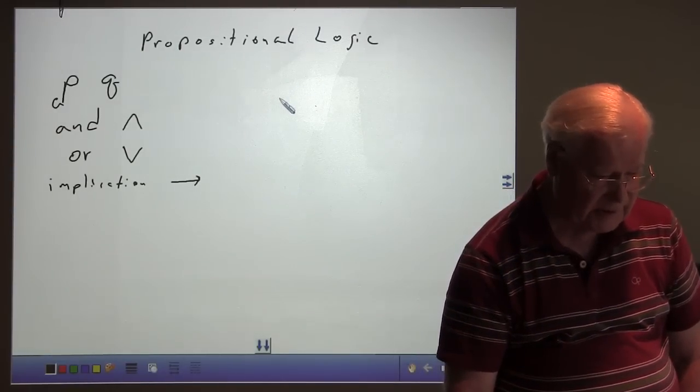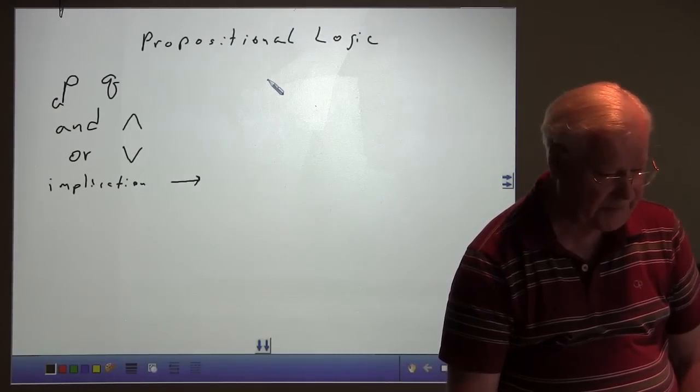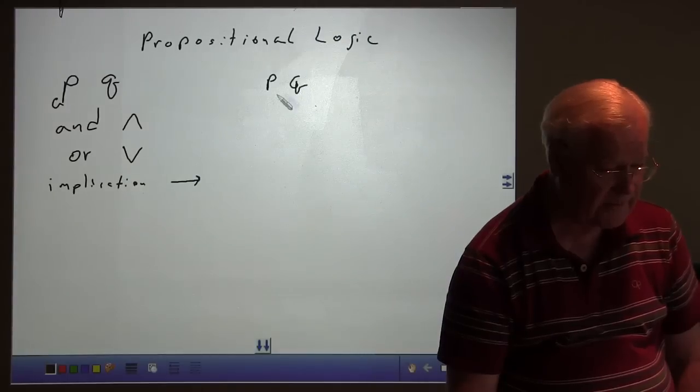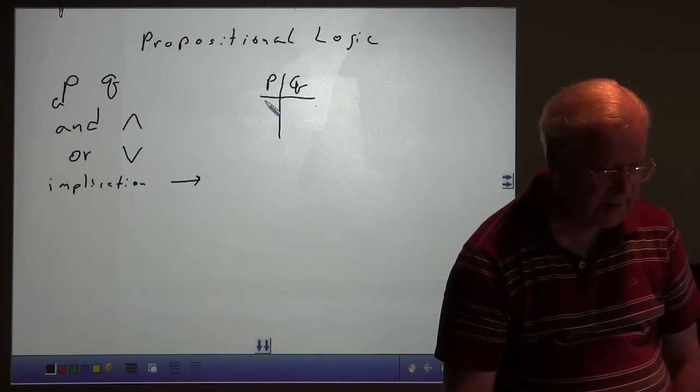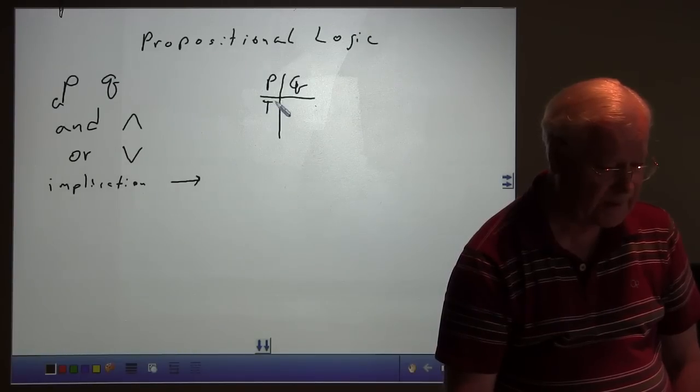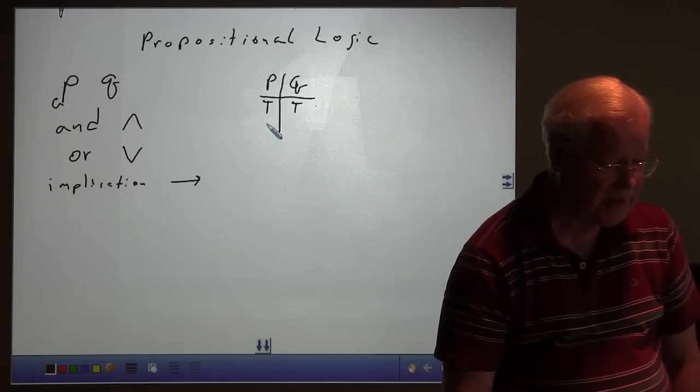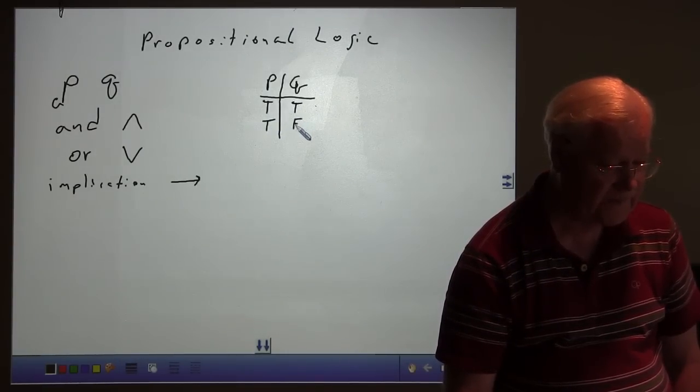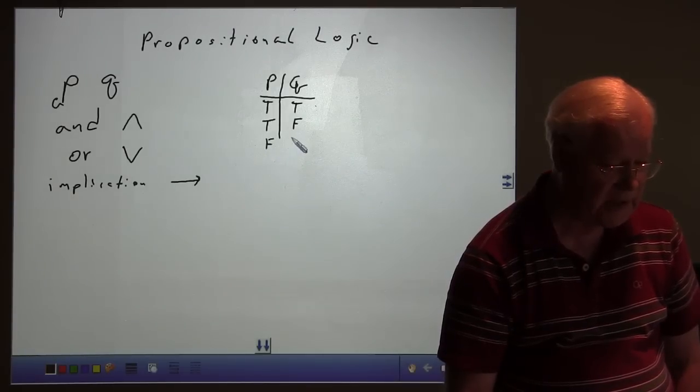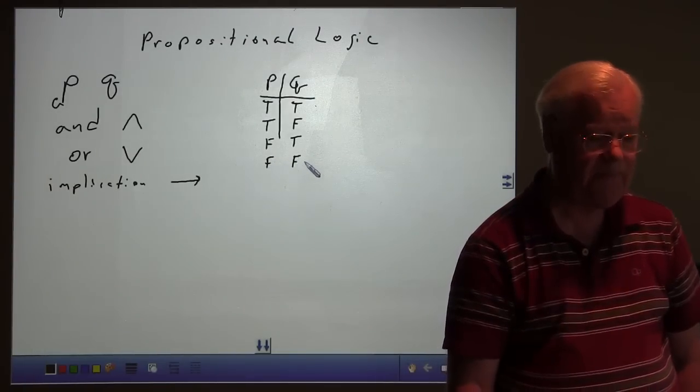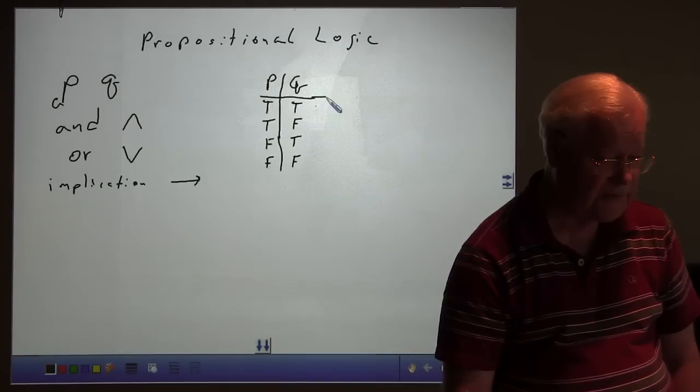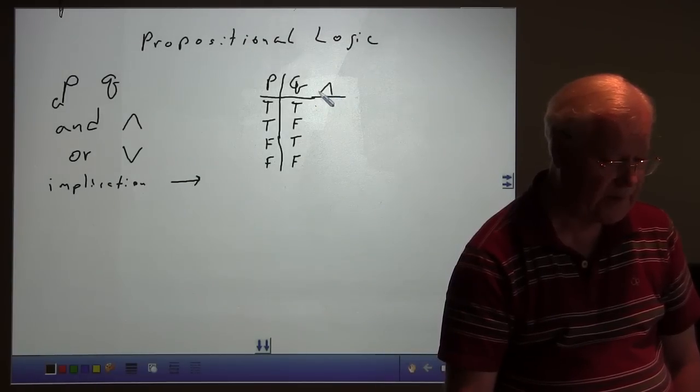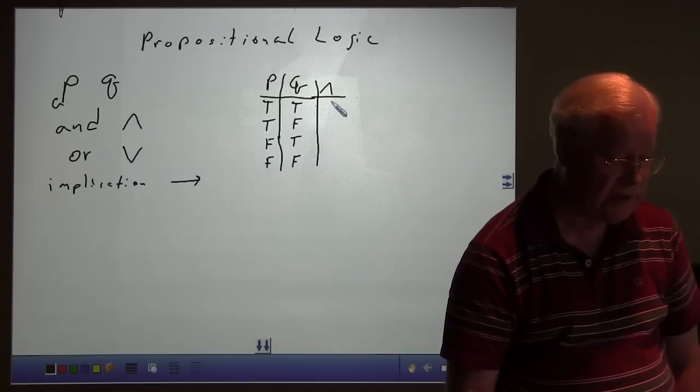In an AND statement, we use a truth table that looks like this. We'd have a P and a Q, and we would form a table where we would look at P being true and Q being true, P being true and Q being false, P being false and Q being true, and P being false and Q being false. That's every combination of those two statements. And if we look at the AND, if both of them are true, then the AND is true.